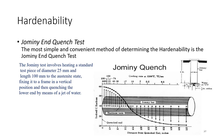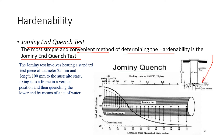To check and measure hardenability, different laboratory tests are available. One of the tests is the Jominy end quench test — the most simple and convenient method of determining hardenability. In this test, the Jominy specimen is heated to the austenite range and then cooled by water at 75 degrees Fahrenheit from the lower end.